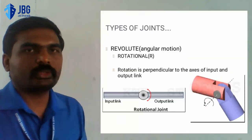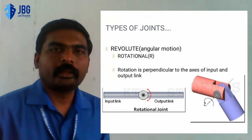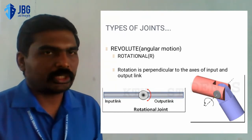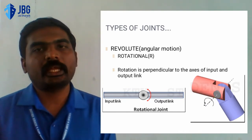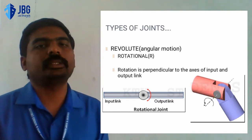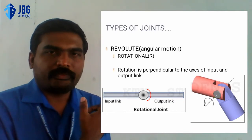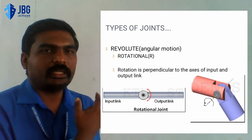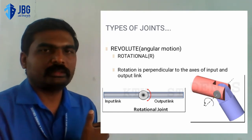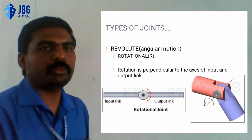Now let's see the different types of revolute joints. First, we can see the rotational joint, which is represented by R. Rotation is perpendicular to the axis of the input and output links. In the figure of a rotational joint, the input link and output link are connected, but the output link can be rotated with respect to the input link.